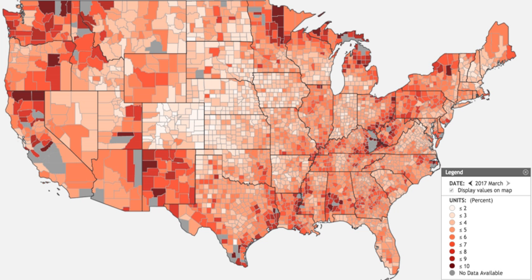Unemployment tends to rise during recessions and fall during expansions. From 1948 to 2015, unemployment averaged about 5.8%. There is always some unemployment, with persons changing jobs and new entrants to the labor force searching for jobs — this is referred to as frictional unemployment. For this reason, the Federal Reserve targets the natural rate of unemployment or NAIRU, which was around 5% in 2015. A rate of unemployment below this level would be consistent with rising inflation in theory, as a shortage of workers would bid wages upward.